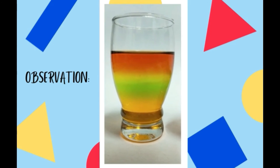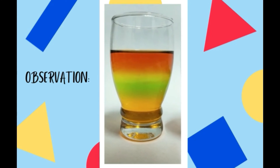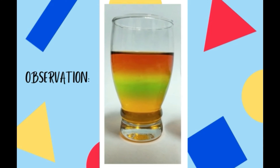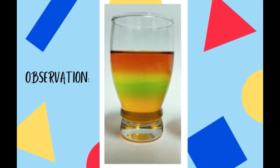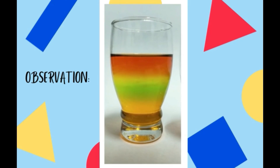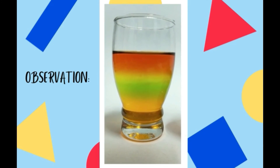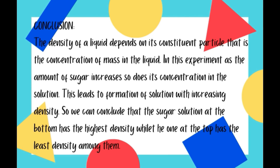The solution with the maximum concentration sinks to the bottom of the glass, while that with the least concentration stays at the top. This shows that the density of the solution is in direct proportion to the concentration of sugar in the solution — the more concentrated the solution, the greater its density.